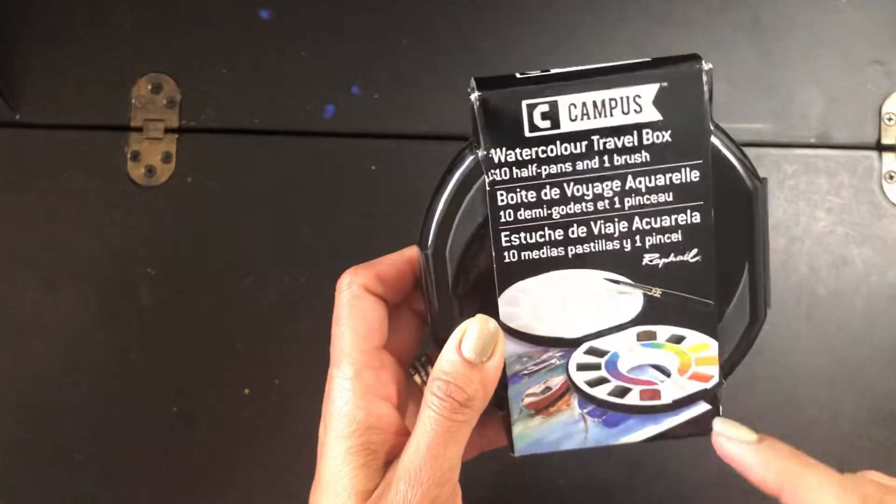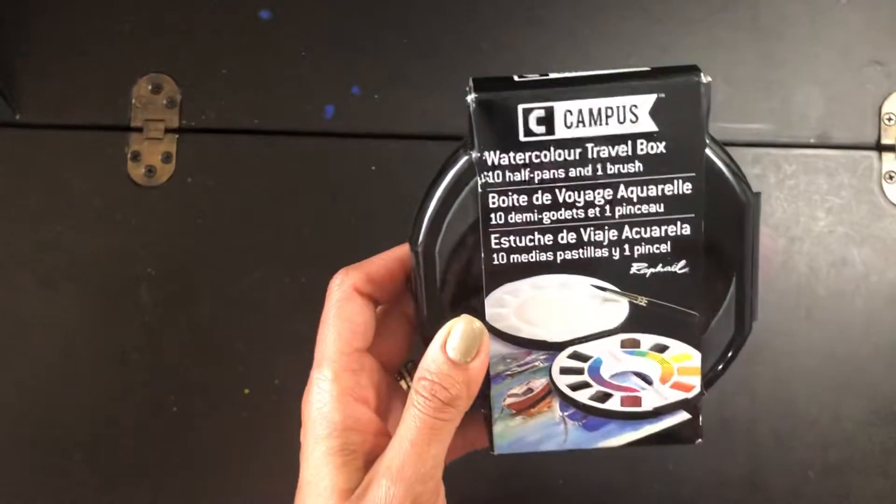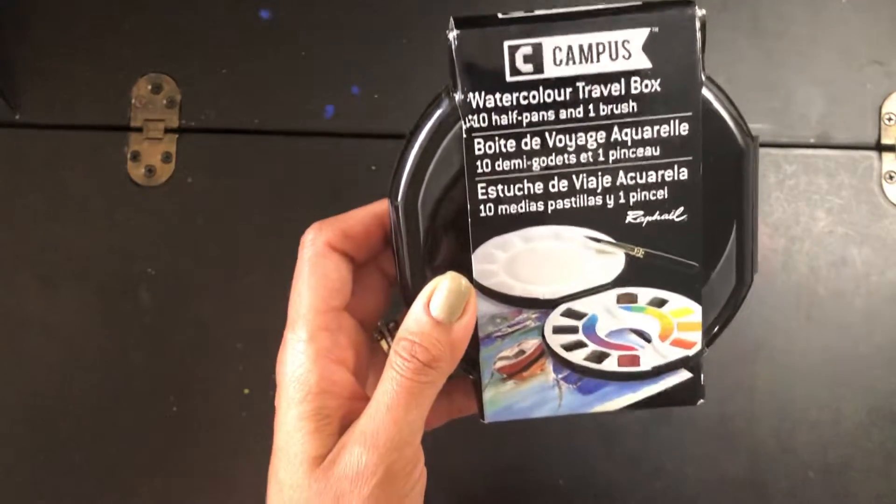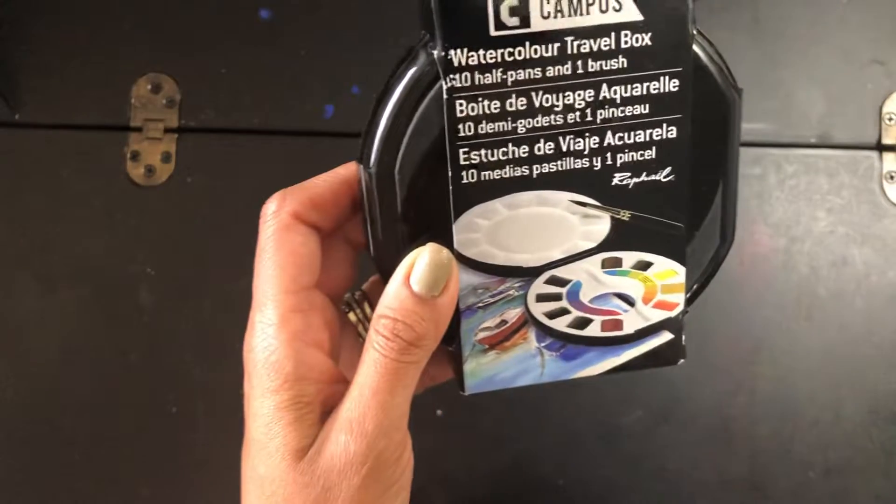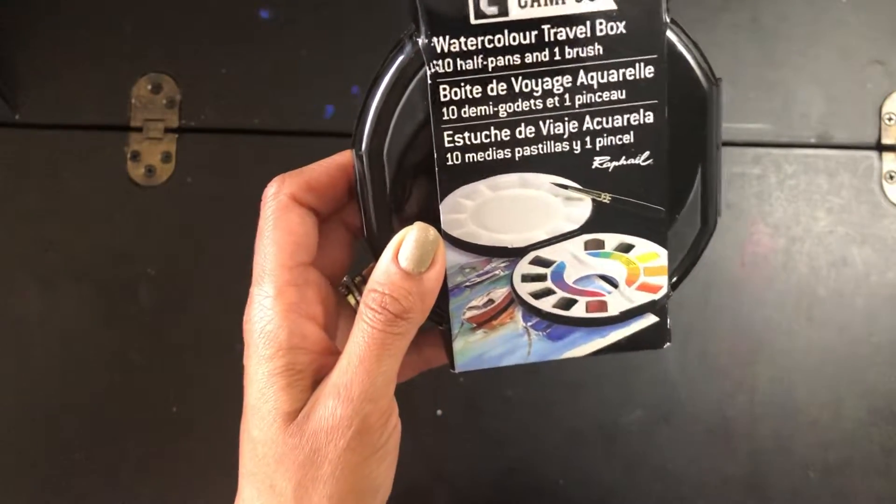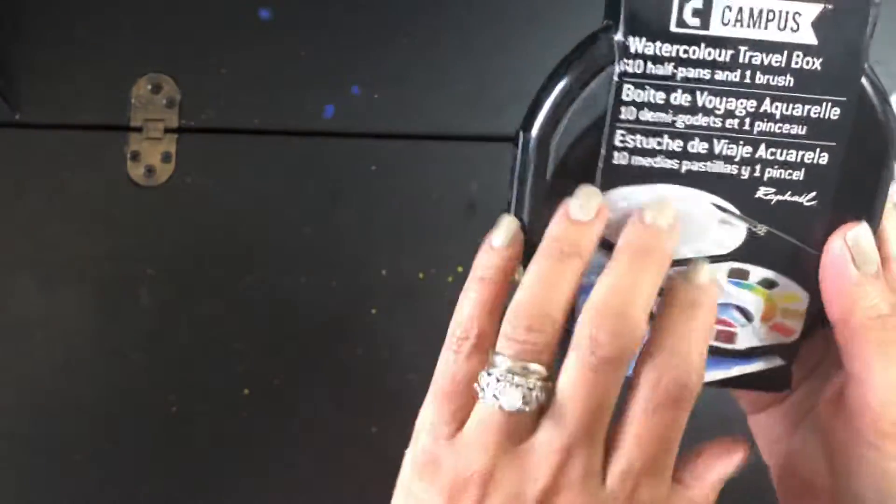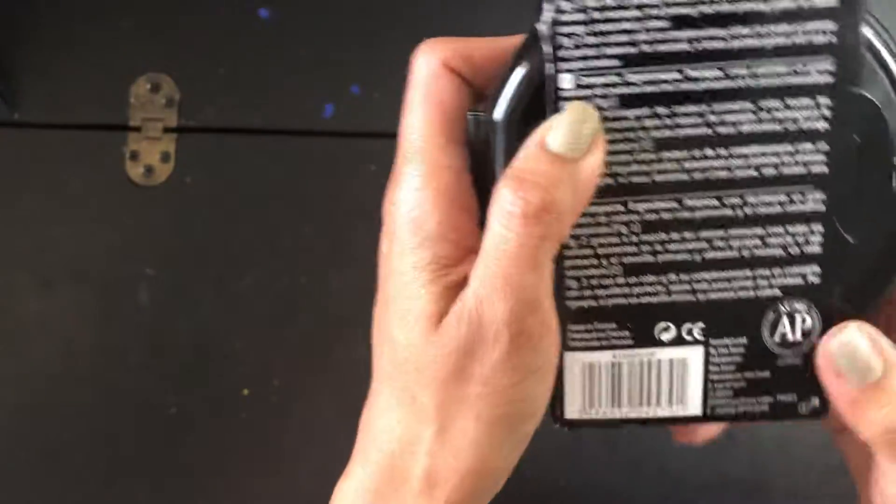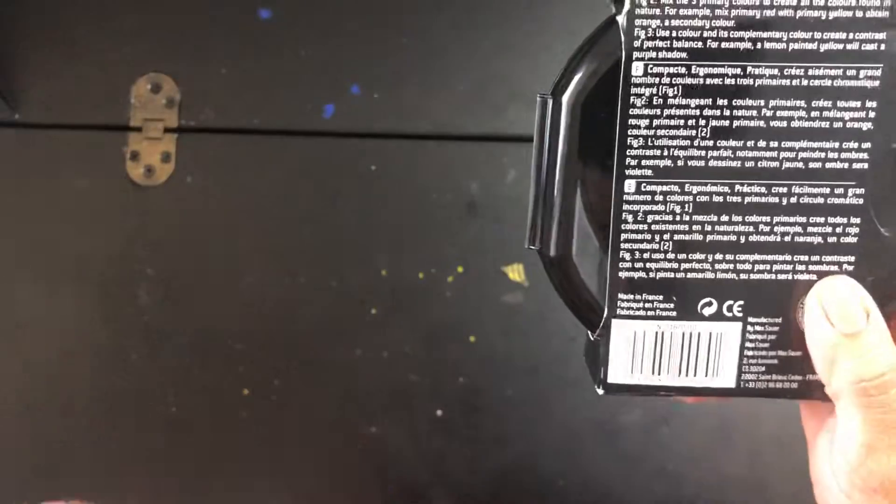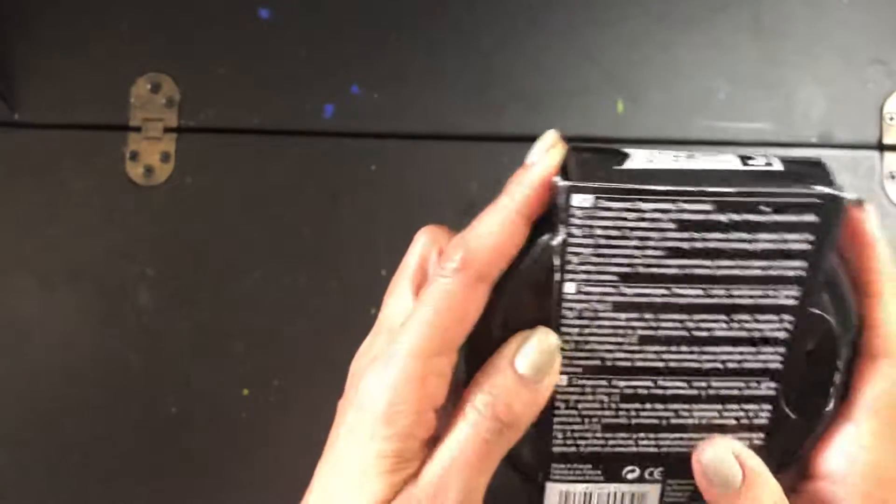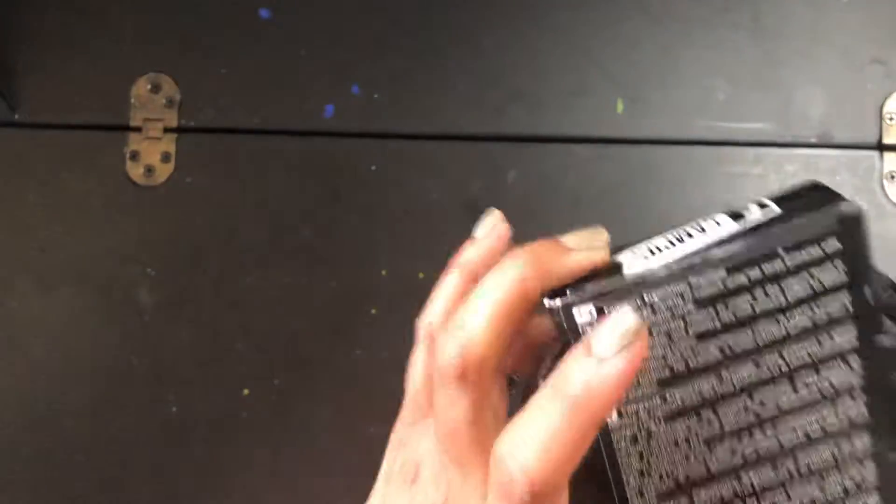But that's something that I have in mind to get a few of these and to get my Schmincke. I think it's 48 colors palette. So that's in the works. That's in the works with Santa. Anyway, so this palette Campus is made in France. It's very affordable. I bought it from Amazon.